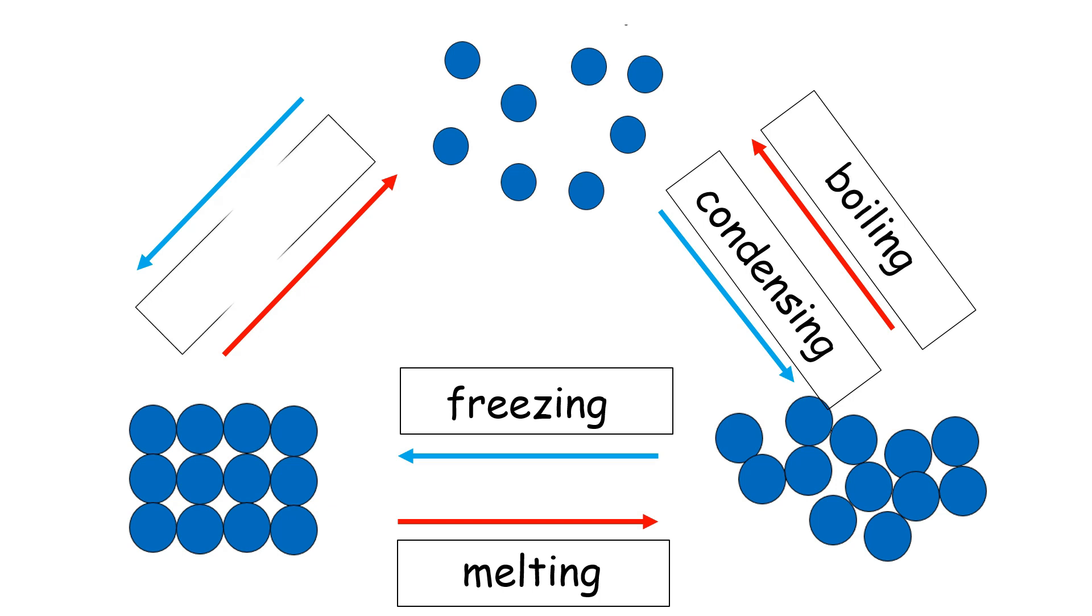Interestingly, a solid can change directly into a gas, and a gas can change directly into a solid. There is one word to describe both of these changes. You may not have heard it before. It's called sublimation. Voila! Your finished diagram should look like this.